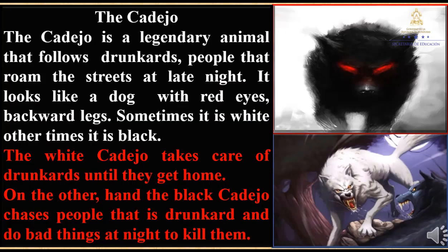Now let's listen to a legend: Decadejo. Listen carefully and do not repeat. Decadejo is a legendary animal that follows drunkard people that run into their lives. The black cat comes from the streets at late night. It looks like a dog with red eyes and backward legs. Sometimes it is white, other times it is black. The white cadejo takes care of drunkards until they get home. On the other hand, the black cadejo takes people that are drunkard and do bad things at night to kill them.